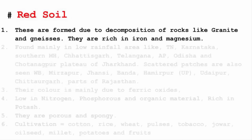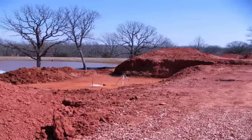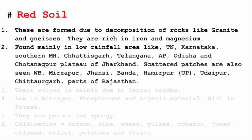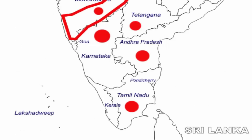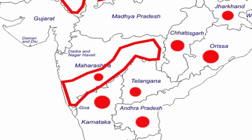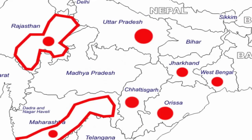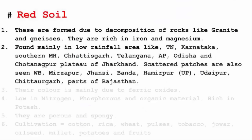The second type of soil is red soil. They are formed due to decomposition of rocks like granite and gneiss and they are rich in iron and magnesium. The content of iron and magnesium makes the soil reddish in color. Red soil is mainly found in areas with low rainfall such as Tamil Nadu, Karnataka, southern Maharashtra, Chhattisgarh, Telangana, Andhra Pradesh, Odisha, and the Chhota Nagpur Plateau of Jharkhand.